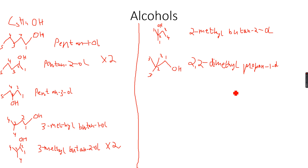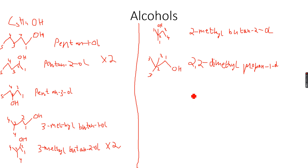So 2,2-dimethylpropan-1-ol is the only three-carbon main chain we can get. We cannot place the alcohol group on the second carbon atom, because then the second carbon atom would be forming five bonds, which is not possible — it can only form four. This is the only three-carbon main chain isomer, and it will exist as only one isomer because there's no chiral center so no optical isomerism, and no carbon-carbon double bond so no geometric isomerism.